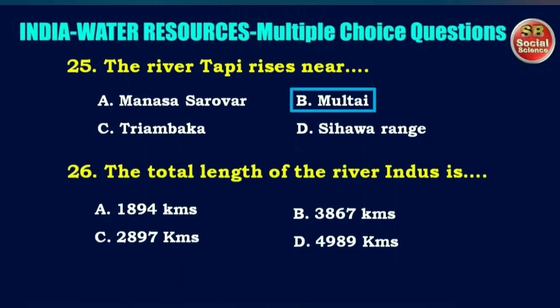The total length of the river Indus is — options are 1894 km, 3867 km, 2897 km, or 4989 km. The right answer is option C: 2897 km.